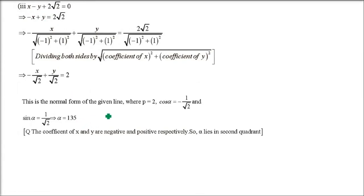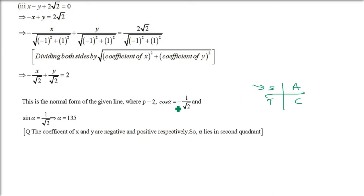For the next sub-part, cos α = -1/√2 and sin α = 1/√2. Since cos is negative and sin is positive, the angle is in the second quadrant. The reference angle with |cos| = |sin| = 1/√2 is 45°. In the second quadrant we subtract from 180°: α = 180° - 45° = 135°.